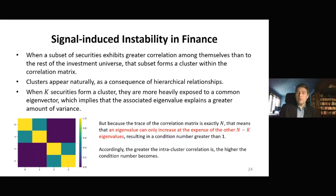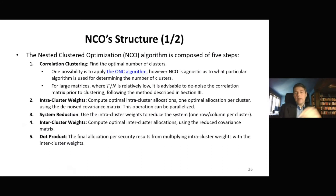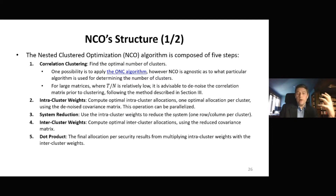We have to figure out a way to optimize this portfolio while controlling for signal-induced instability. And this is what we are going to see now: the NCO algorithm. NCO stands for nested cluster optimization. The algorithm follows five steps. Step number one is correlation clustering. The first thing we need to do is apply clustering algorithms, whether agglomerative or hierarchical — the algorithm of your choice. You can use the optimal number of clusters algorithm, the ONC algorithm, but you can apply other algorithms. The importance is that now we are able to make a partition of our investment universe, where each security will belong to one and only one cluster.